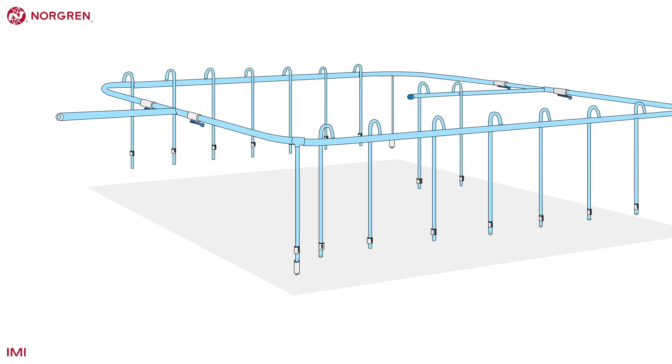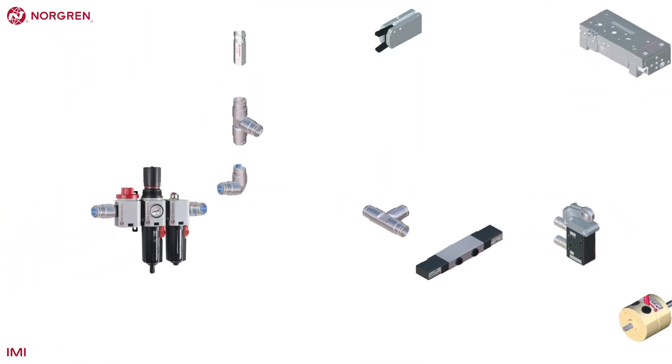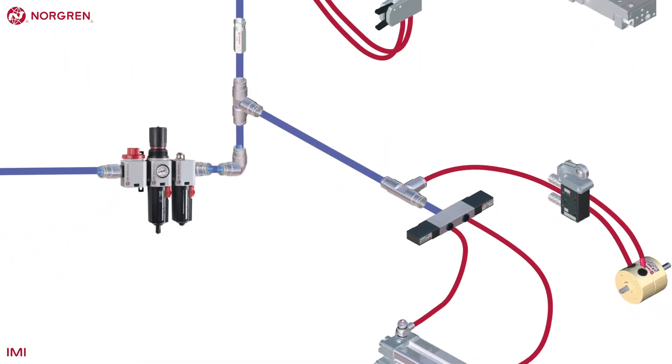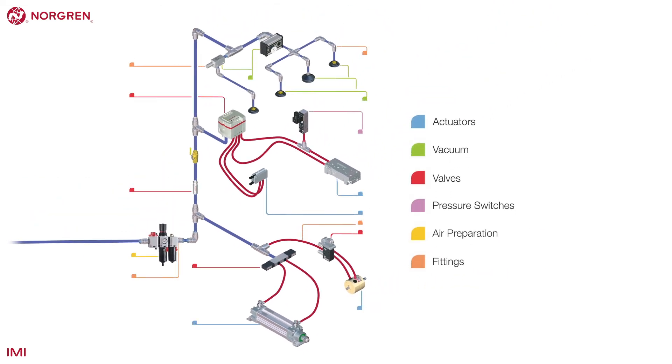Many IMI Norgren products are found at the end of these downpipes, at the point of use. Notice the air prep unit, which includes a shut-off valve. The colours in the illustration refer to different sections, which are all part of the same system IMI Norgren has used for the last 15 years.